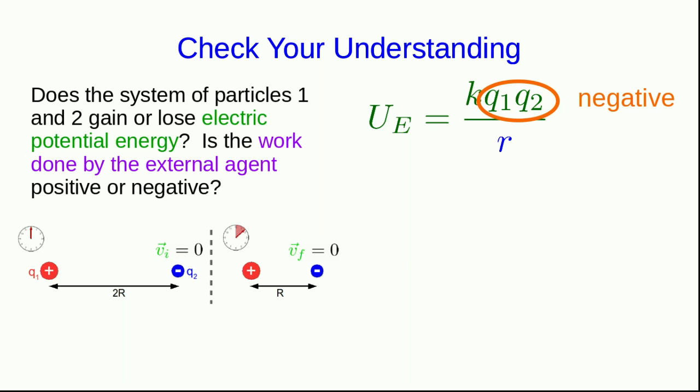Or in other words, the change in potential energy is negative. Well, if the change in potential energy is negative and there's been no change in kinetic energy, then the total change in energy of the system is negative, and that must be the work done by the external agent.